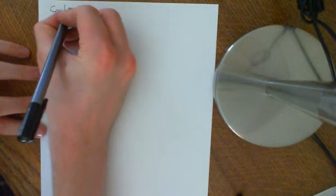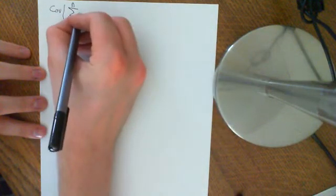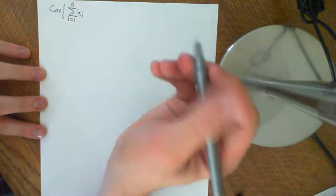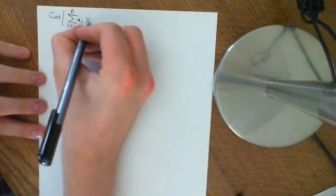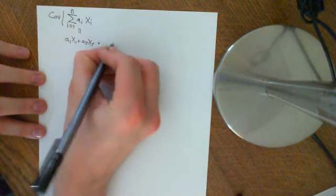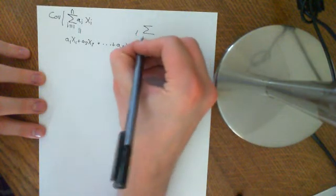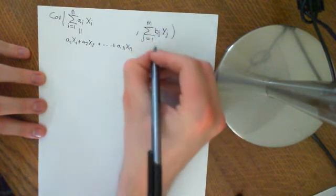If we now consider the generalisation, we consider the covariance of two sums: the sum i equals 1 to n of aᵢxᵢ, where the aᵢ are real scalar quantities, and the sum j equals 1 to n of bⱼyⱼ. Written out, this is a₁x₁ plus a₂x₂ all the way up to aₙxₙ, and we're taking the covariance of this with b₁y₁ plus b₂y₂ all the way to bₘyₙ. We're taking the covariance of these two great sums, applying both linearity properties — this is the generalisation of bilinearity.